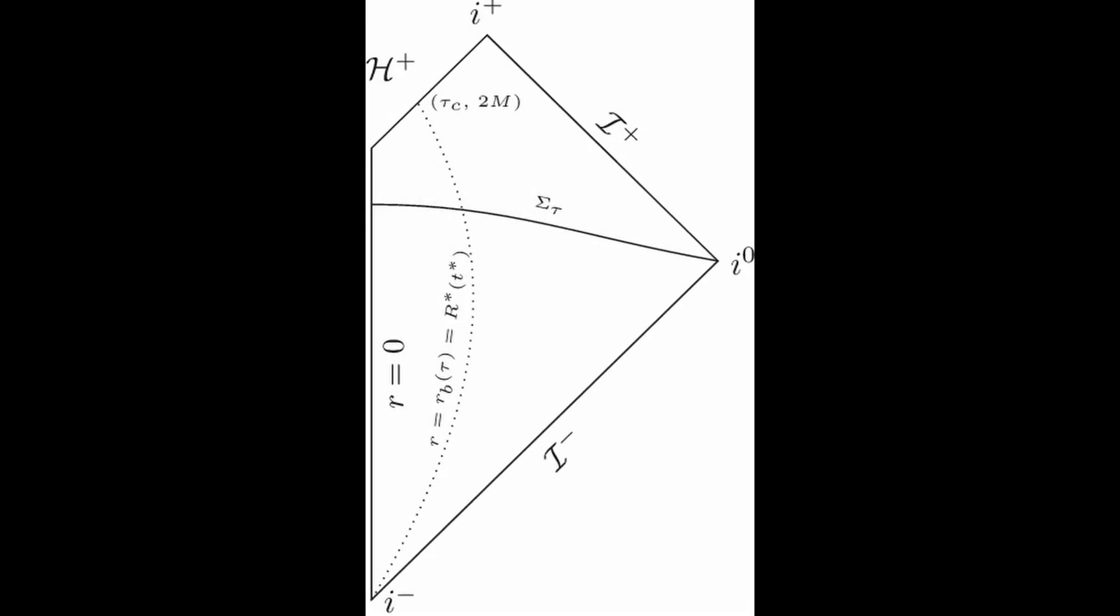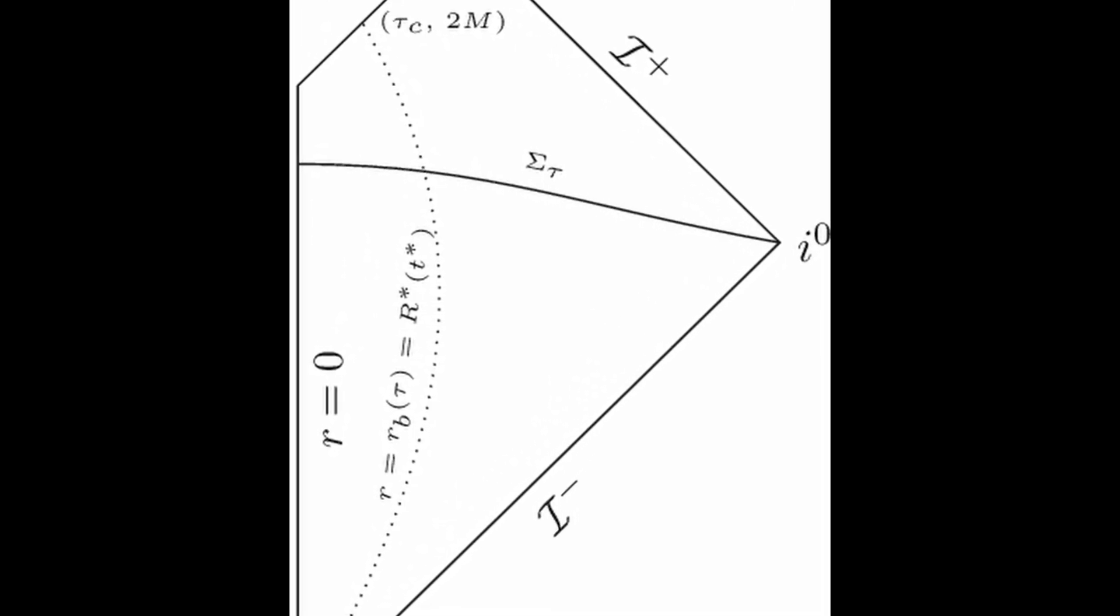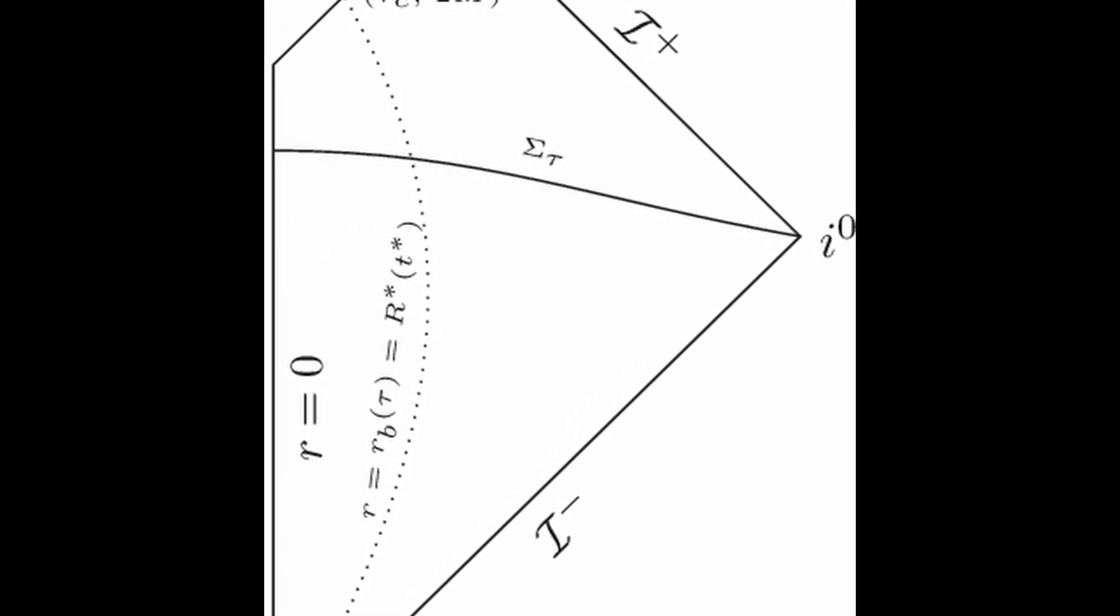The Oppenheimer-Snyder model not only deepened our understanding of the universe, but also challenged our perception of space and time. The curvature of space-time around a black hole was unveiled, distorting the very fabric of reality.